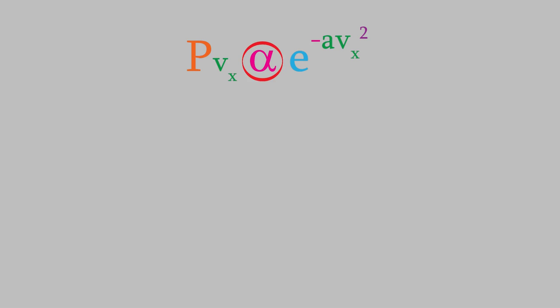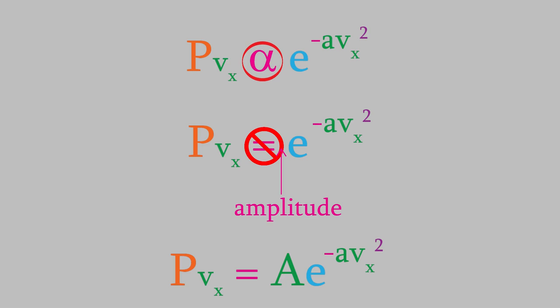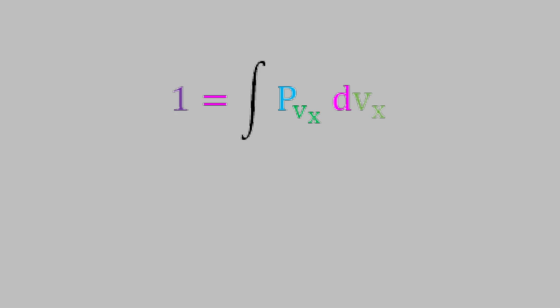The probability that a molecule will have a velocity vx is proportional to the exponential term we've been looking at. But why is the probability proportional to that term, and not equal to it? The reason is that the probabilities for each velocity must add up to 1. If we use an equal sign, we're saying that the amplitude is equal to 1, which means that the height of the curve would be 1, but that can't be correct. Instead, we need to scale the curve by giving it an amplitude that we'll call capital A.